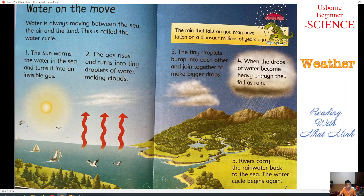This is the cycle of rain. The river carries the rainwater back to the sea and the water cycle begins again. The rain that falls on you may have fallen on a dinosaur millions of years ago.